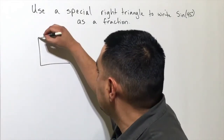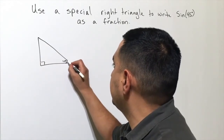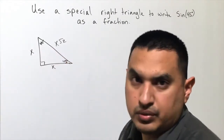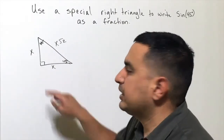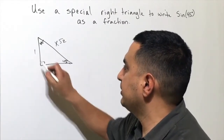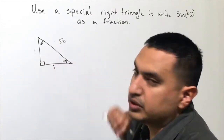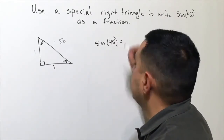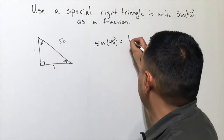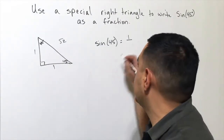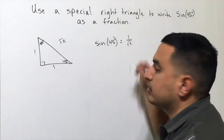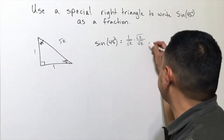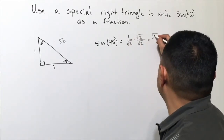For sine of 45 degrees, we use a 45-45-90 triangle. If one angle is the right angle and another is 45°, the third must also be 45°. The pattern is x, x, x√2. Setting x = 1 gives sides 1, 1, and √2. Sine of 45° is opposite over hypotenuse: 1 over √2. Rationalizing the denominator by multiplying top and bottom by √2 gives √2 over 2.